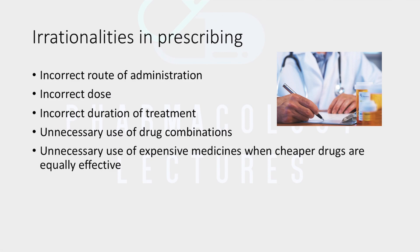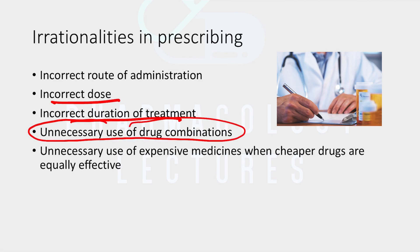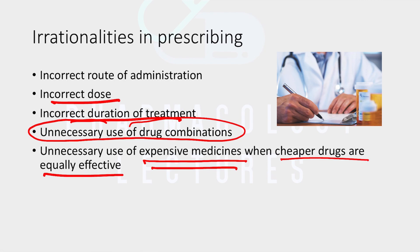Other irrationalities include incorrect route of administration, incorrect dose, and incorrect duration. There is also unnecessary use of drug combinations — as we saw in the topic on fixed-dose combinations, prescribing combinations which are not needed is irrational. Finally, unnecessary use of expensive medicines when cheaper drugs are equally effective is also irrational, sometimes driven by offers from pharmaceutical companies.